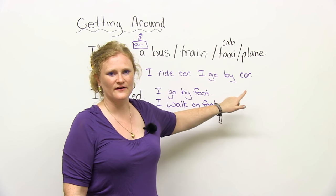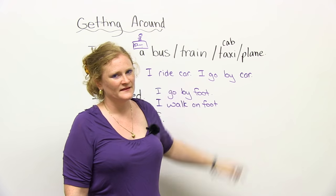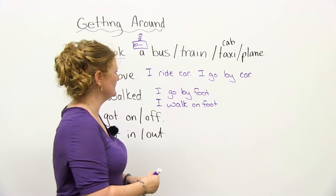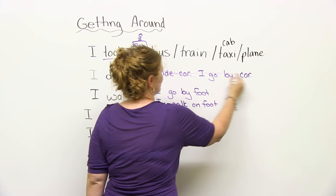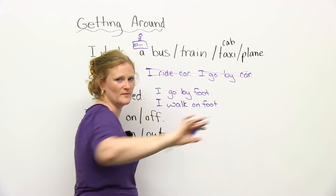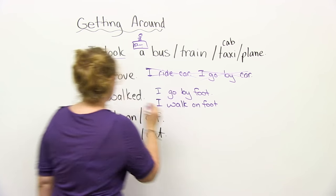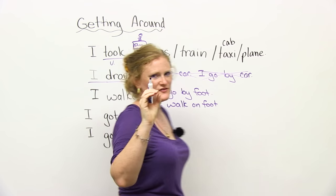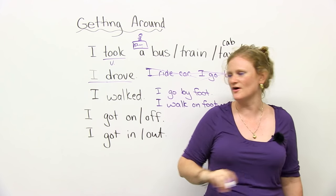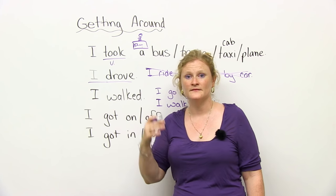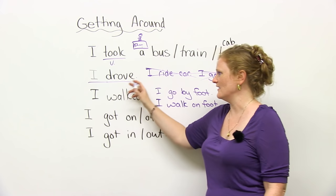I go by car. No, no, no. These, unfortunately, are wrong. We don't say I go by car or I ride car. We say, very easily, past tense of the verb drive, drove. How did you get here? I drove.